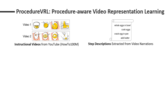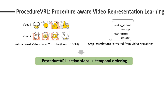In this work, we propose to learn video representation by using the instructional videos from YouTube and the step descriptions from video narrations. Our method doesn't require any human annotation. The learned video representation includes both action steps and their temporal ordering.